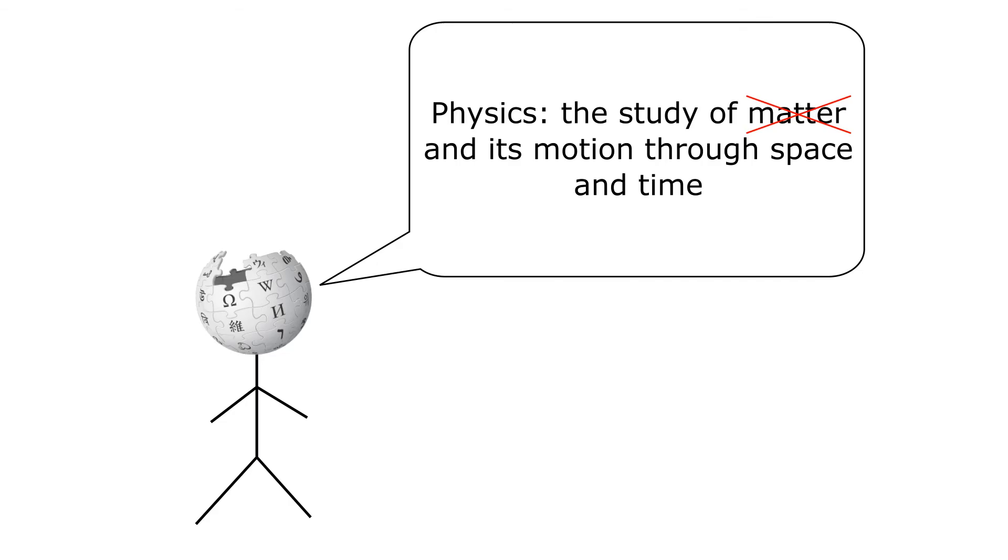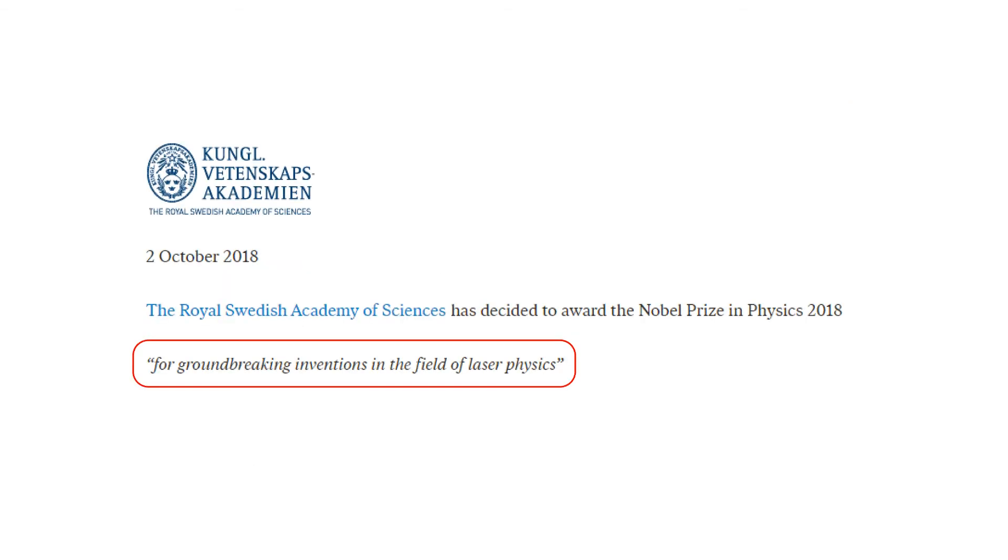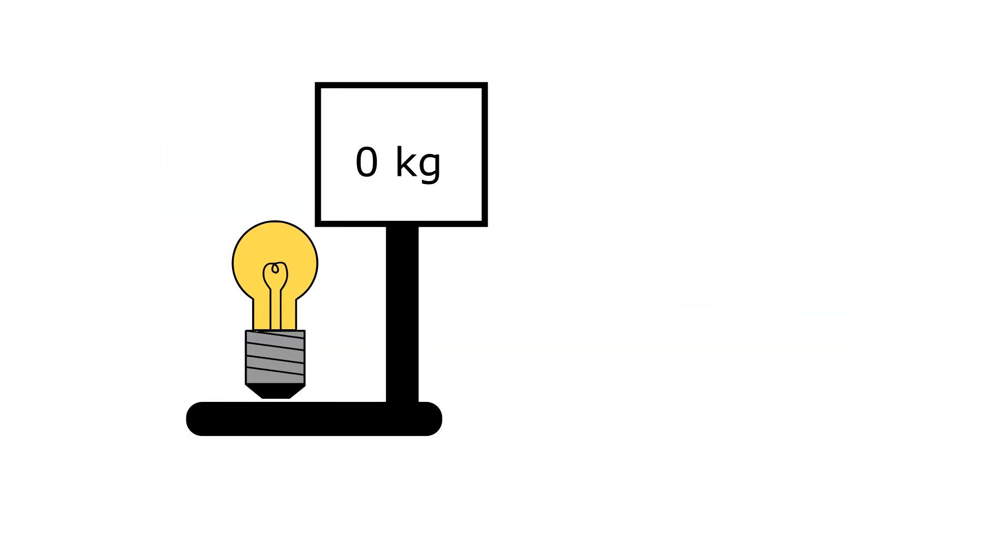In fact, the Nobel Prize in Physics was just recently awarded for advancements in the physics of light. Since light is massless, it does not fall under the category of matter.